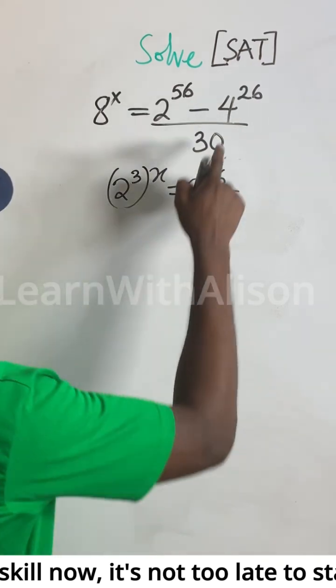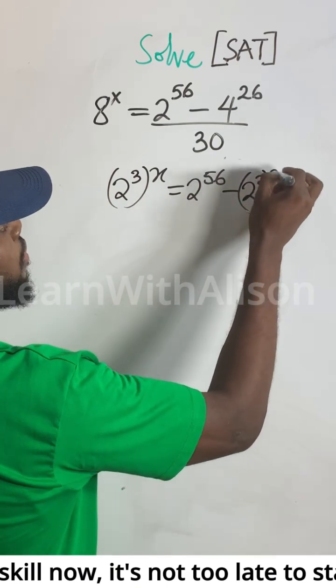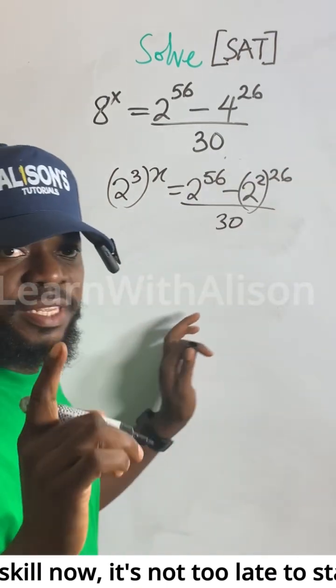Minus 4, which will be reduced to 2 to the power of 2, to the power of 26 divided by 30. That will be the next step.